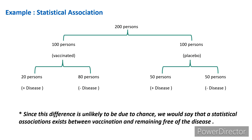In the control group, among 100 persons who took placebo, 50 persons develop disease and 50 are free from disease. By seeing this, we can say there is a statistical association between vaccination and remaining free of disease, and this association most probably can be causal.